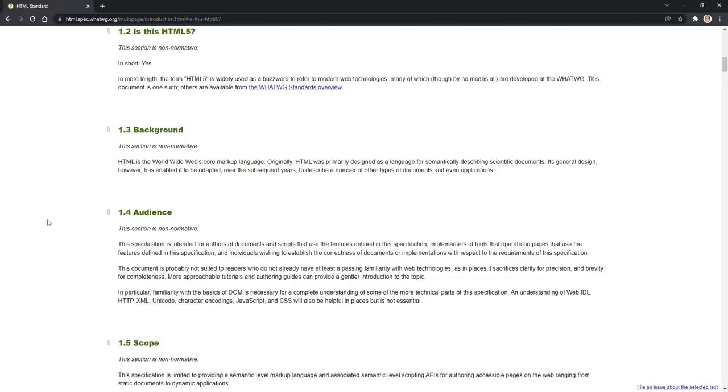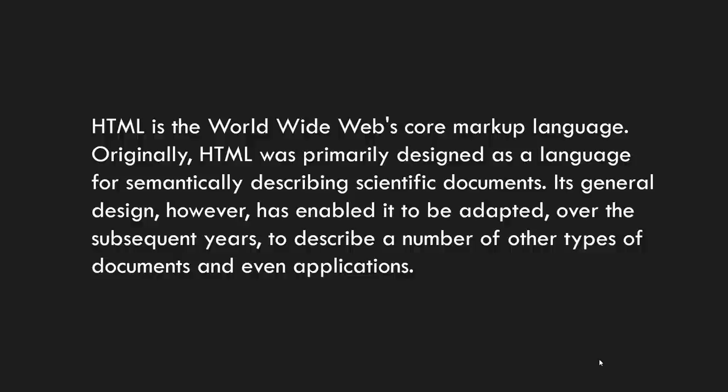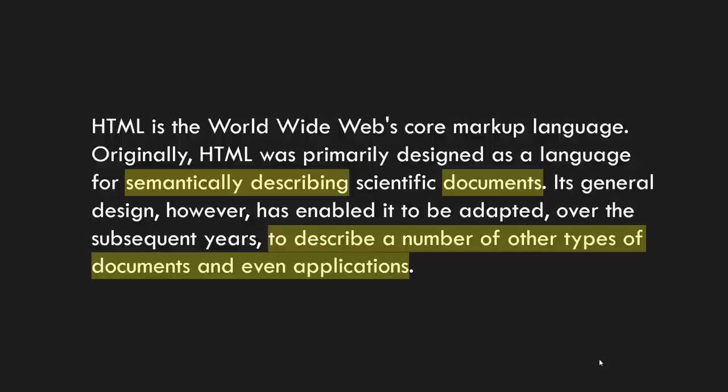Notice that from the very beginning, HTML was intended to be semantic. It was intended to help add meaning to scientific documents. Sometimes people talk about HTML5 as if that's when semantics came into play - that's wrong. HTML has always been about semantics. The scope section of the specification says this specification is limited to providing a semantic level markup language, and is about authoring accessible pages on the web, ranging from static documents to dynamic applications. So HTML is a semantic language to author documents intended to be accessed on the internet.